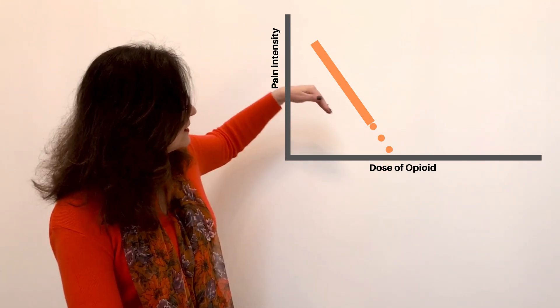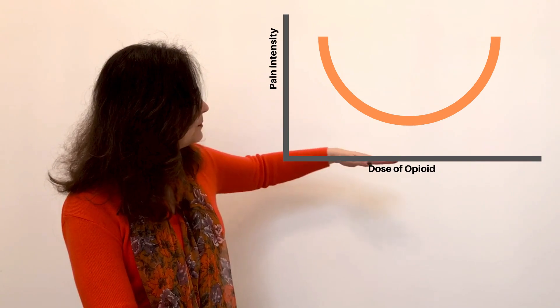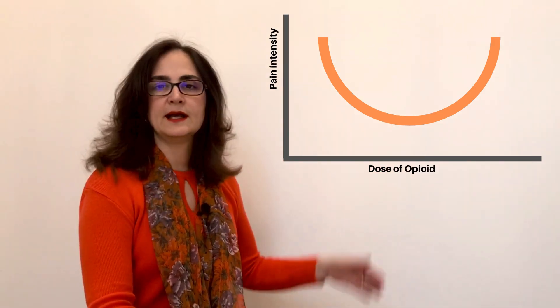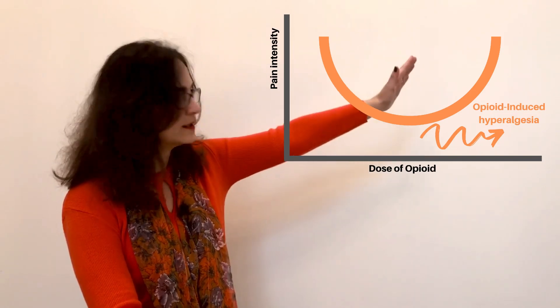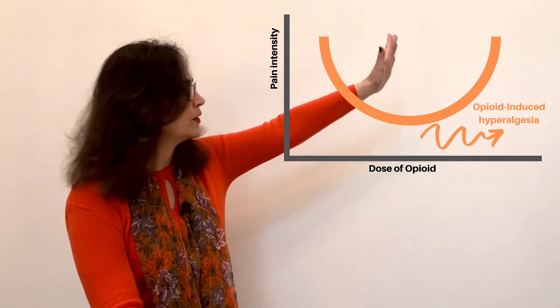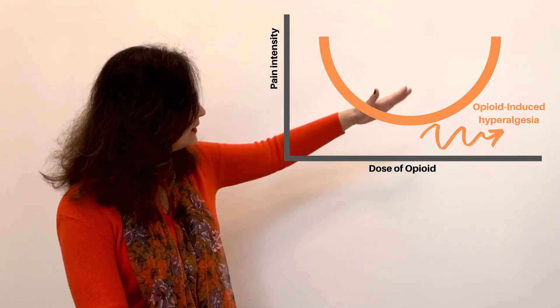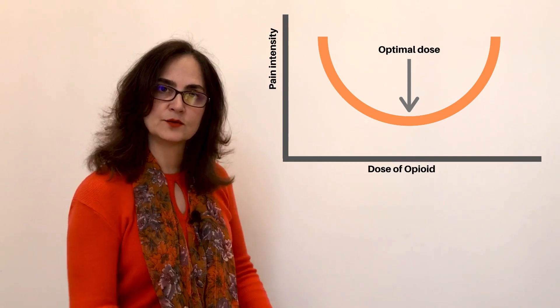Instead of eliminating the pain, instead of going to zero, now the pain starts going up and it's because of the opioid-induced hyperalgesia. So now the person is at a higher dose of opioids, has a lot of pain intensity. What we need to do is we need to bring it down to the optimal dose and then this hyperalgesia will be eliminated.